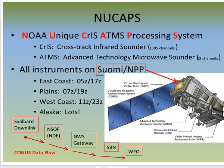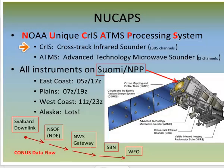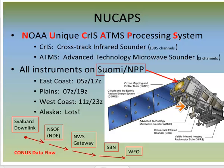NuCAPS is the NOAA Unique CrIS-ATMS Processing System, combining information from CrIS, an infrared sounder, and ATMS, a microwave sounder. These are two instruments onboard Suomi-NPP, a polar orbiter with an orbit such that it scans the east coast around 5Z and 17Z, the plains around 7Z and 19Z, and the west coast around 11Z and 23Z.